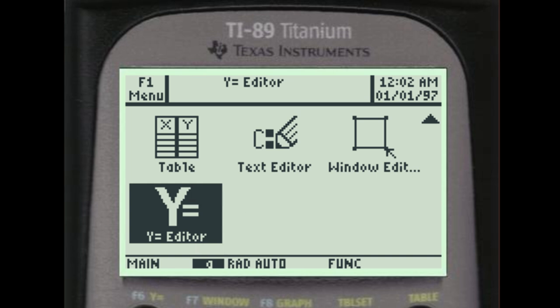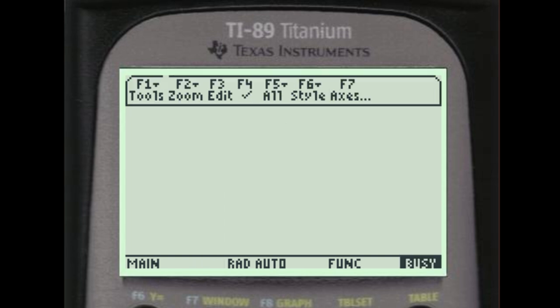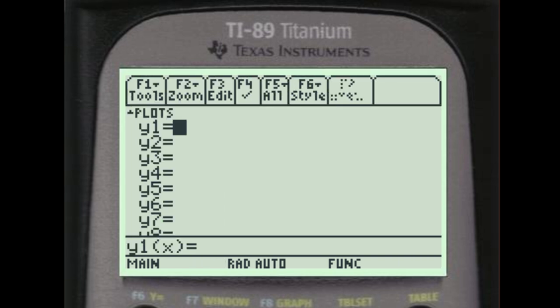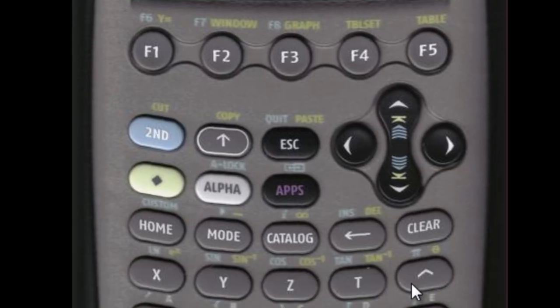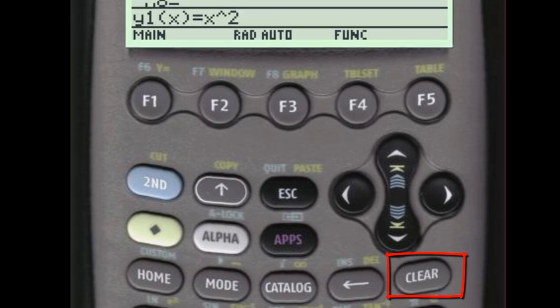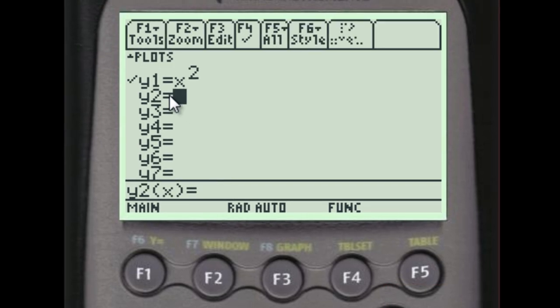Text editor for notes, and this is the Y equals editor where you're going to put in functions that you want to graph or manipulate in some way. So what we can put in is X squared. To raise something to a power, this is the key you use, the caret key, it's called. So X squared, press enter, and it enters X squared into our Y equals.